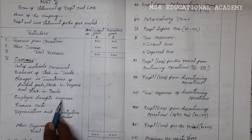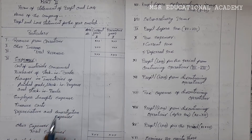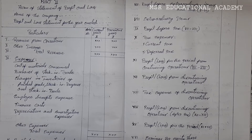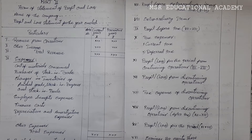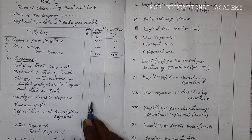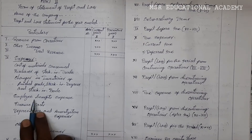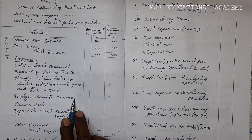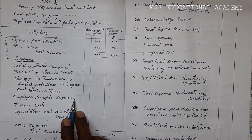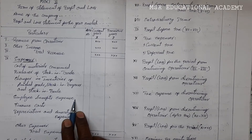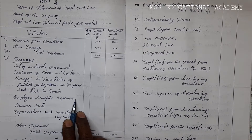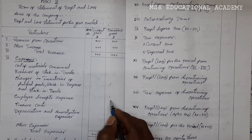Next is employee benefit expenses — whatever expenses are paid to the employees, that is the total expenses we should write under employee benefit expenses. For example, salaries and wages and outstanding salaries also come to employee benefit expenses. This also has a notes to accounts, so we briefly discuss it under notes to accounts.